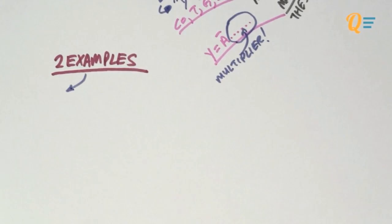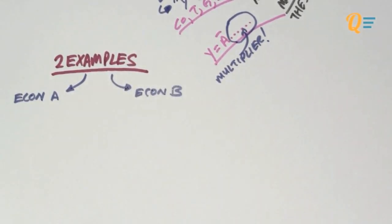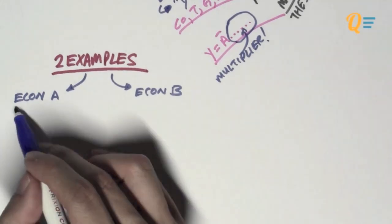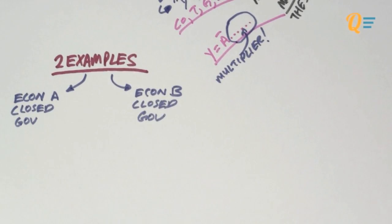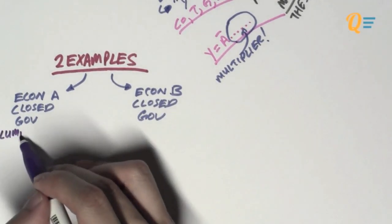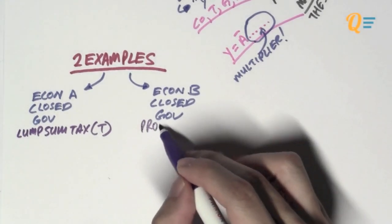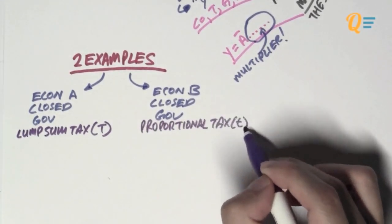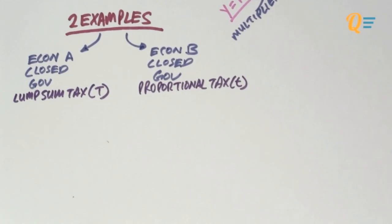Now, just let me use two examples to show you how this is going to work in action. So, we've got two examples. We've got economy A and economy B. Let's assume that both economies are closed and there is a government in both economies. Now, the only difference is that economy A is going to have a lump sum tax, and economy B is going to have a proportional tax.